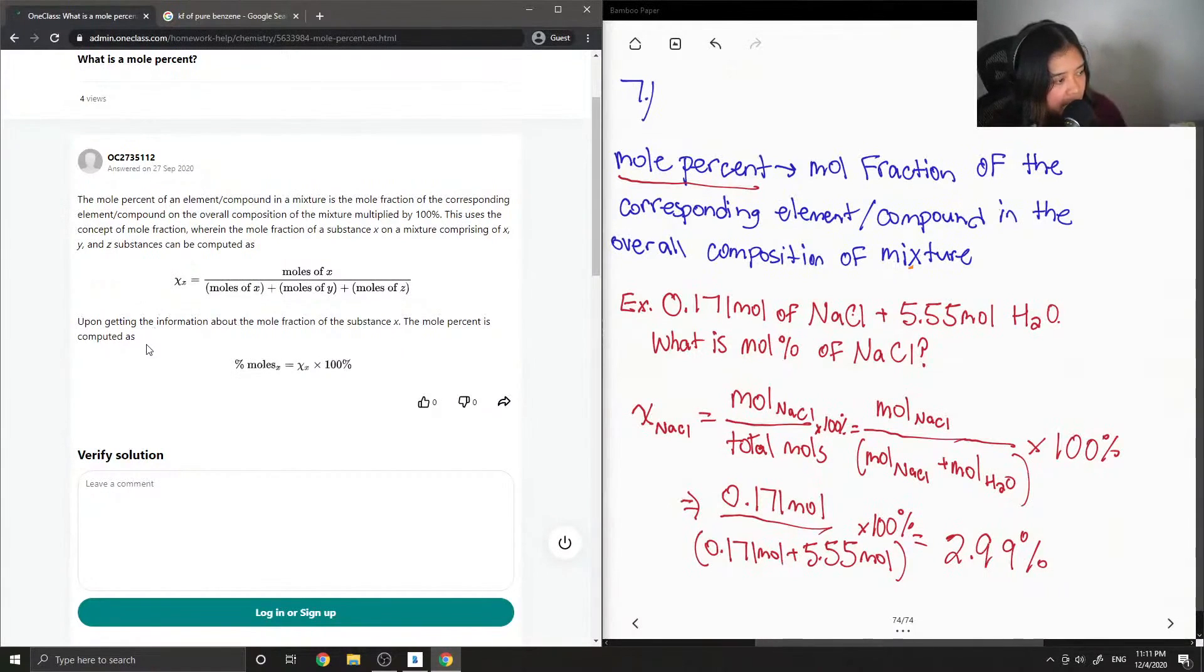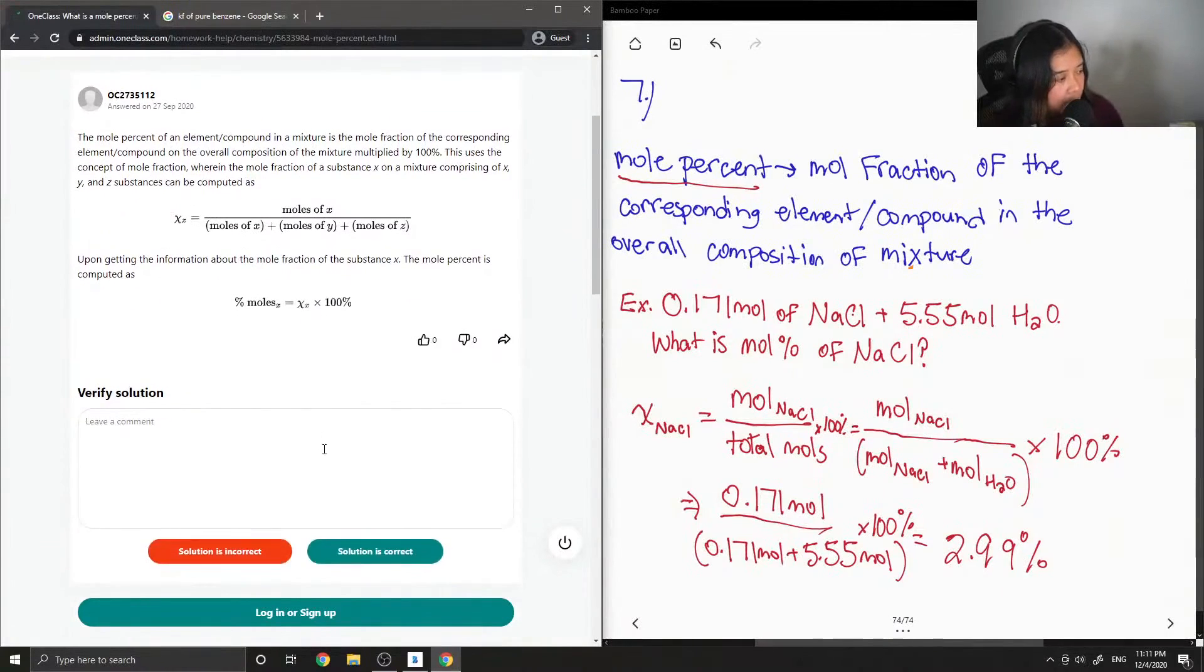Upon getting the information about the mole fraction of the substance, the mole percent is computed as... Yep, so percent moles is equal to x times 100. So this solution is correct.